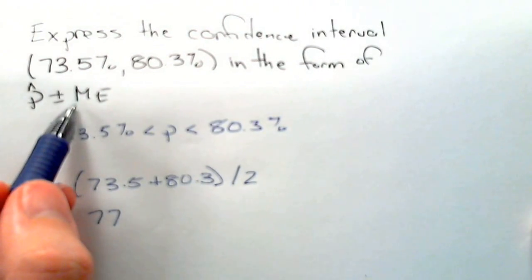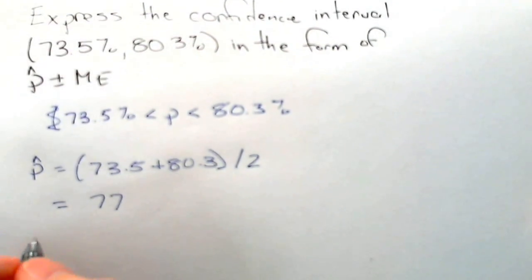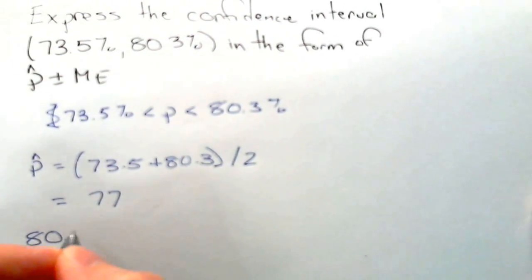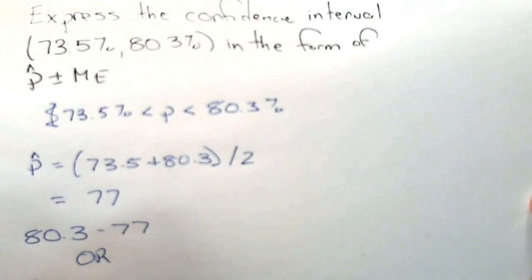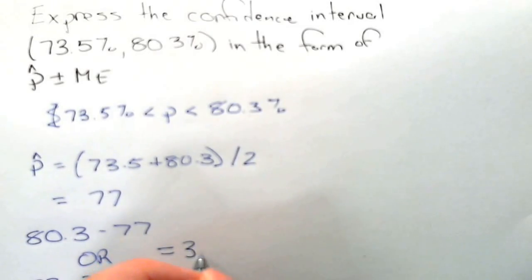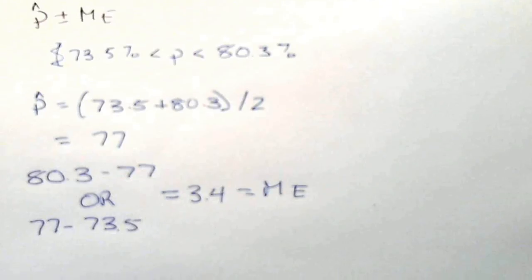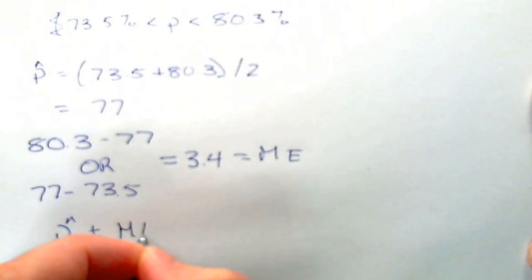The margin of error is the difference of p-hat from each of the two end values. So we can do 80.3 minus 77, or 77 minus 73.5. In both cases, these are equal to 3.4, which is the margin of error.